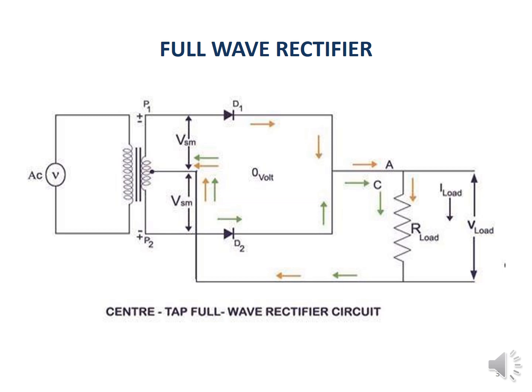Here we are using the diode as a controlling device, but since it is uncontrolled, there is no active control. When the AC voltage is converted into DC by means of these diodes, we can get the rectified output voltage across the load.